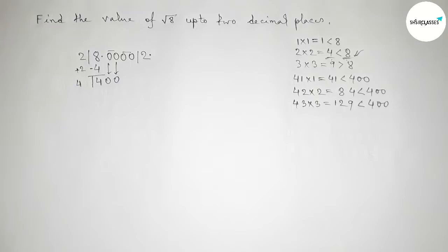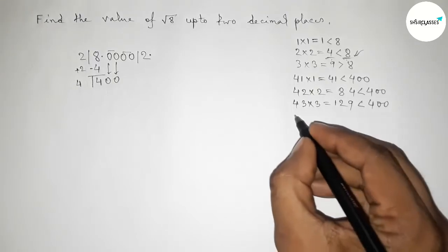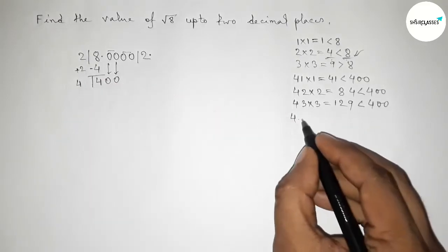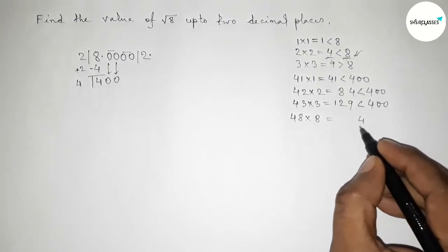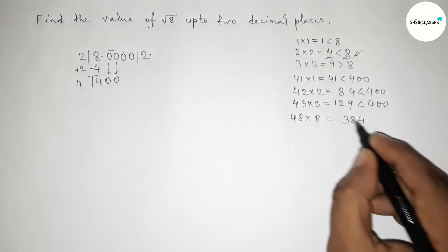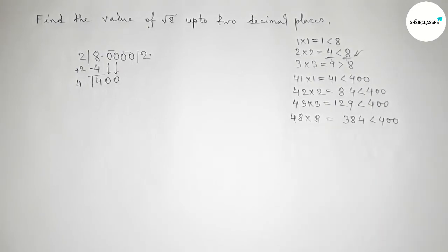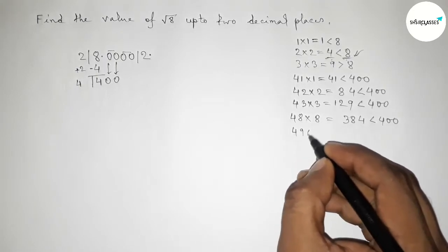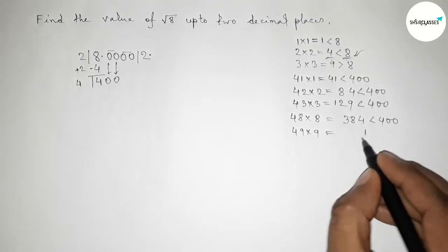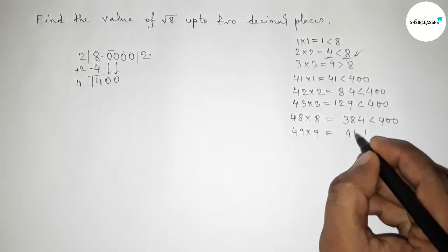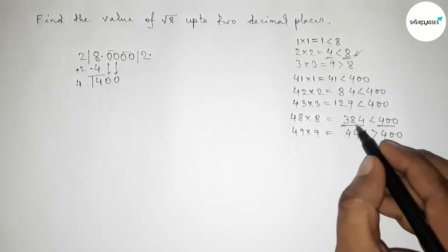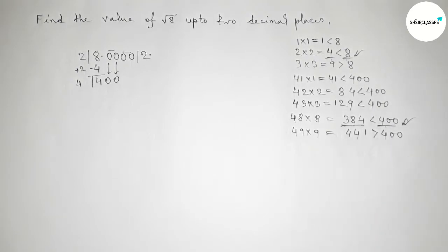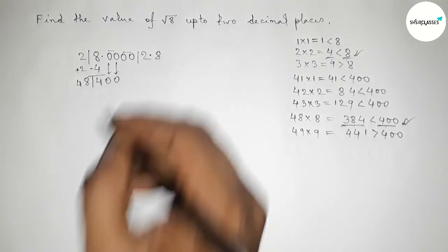By this method, we try 48 times 8: 8 times 8 equals 64, carry 6, then 8 times 4 equals 32, plus 6 equals 38 — giving 384, which is less than and almost near 400. Trying 49 times 9: 9 times 9 equals 81, carry 8, then 36 plus 8 equals 44 — giving 441, which is greater than 400. So we take 8.